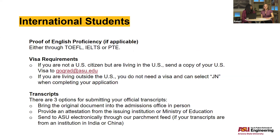For international students, we require proof of English proficiency via TOEFL, IELTS, or PTE, if your degree was completed outside the U.S. and the primary language was not English. Regarding visa requirements: if you're not a U.S. citizen but are currently in the U.S., graduate admissions needs a copy of your visa, sent to gograd@asu.edu. If you'll be completing the degree outside the U.S. and not coming here, select 'JN' as the visa type when you apply — that means international, not coming to the U.S. — so your application won't be held up.